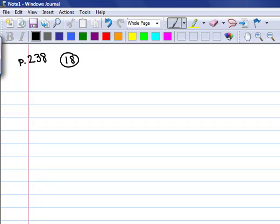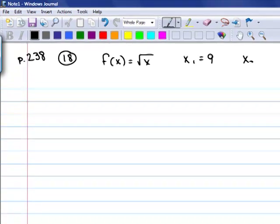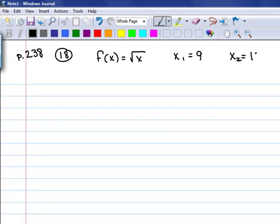So the function now is the square root function. And we have a starting point at 9, and an ending point x sub 2 at 16. So before we use the formula, and again, you may want to write this down every time you use it so that you get it memorized, because it's not going to be given to you on an exam.